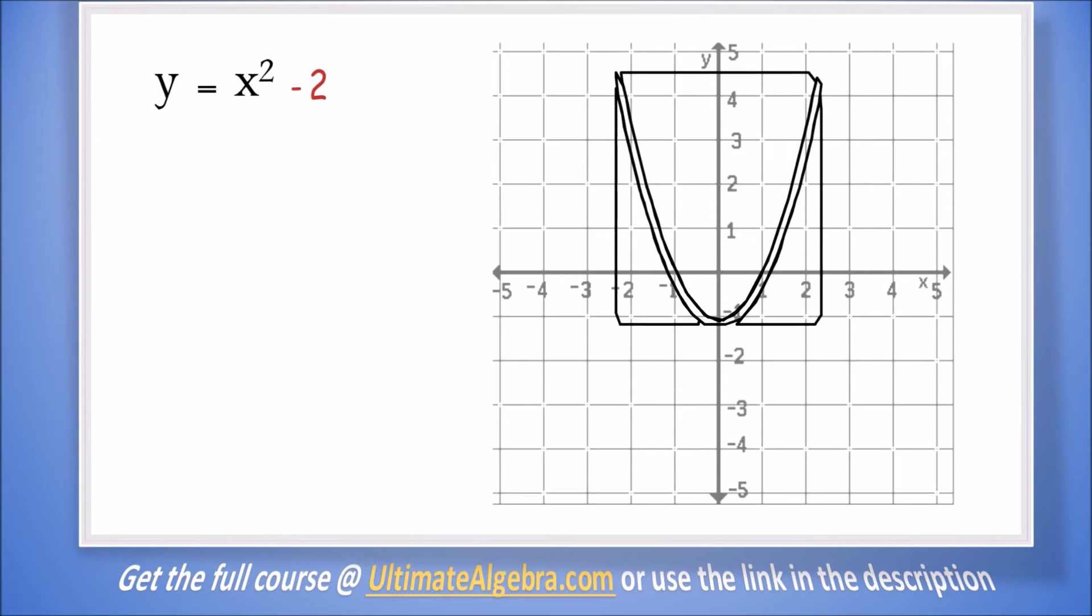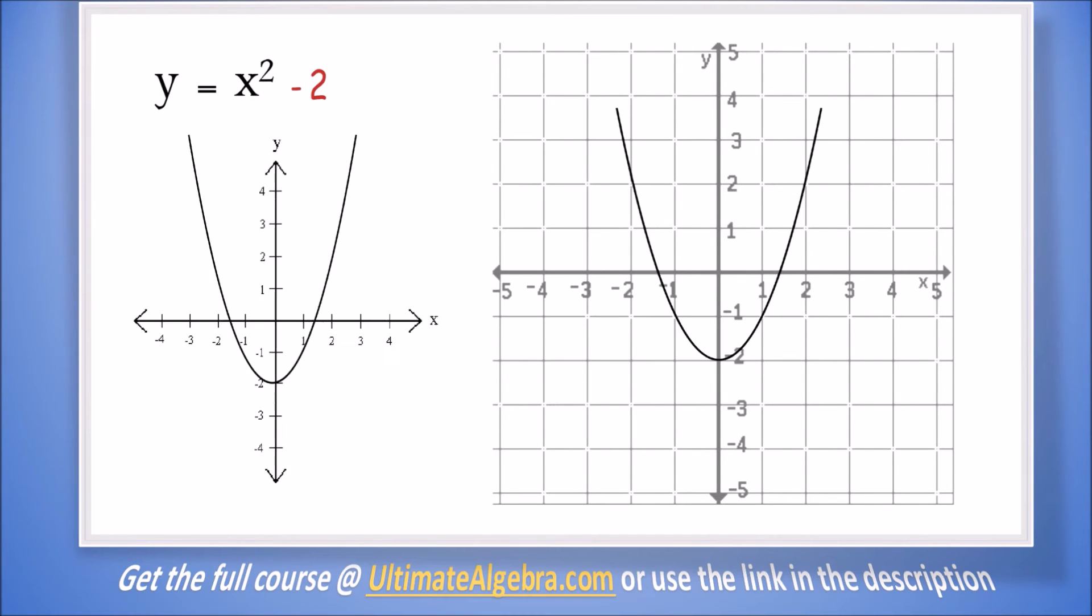We don't even need a table. Let's look straight at the graph. This is the basic parabola. We will move the basic parabola 2 down, so this will be the graph of this equation. Please note that we are normally just required to have a rough sketch of graphs, so this graph could have just been represented simply this way. The most important thing is to show the shift.